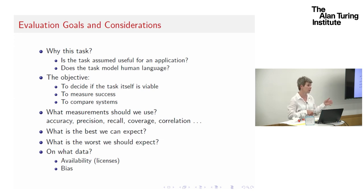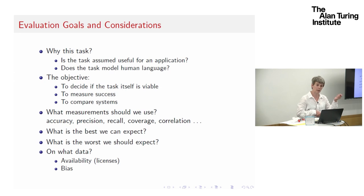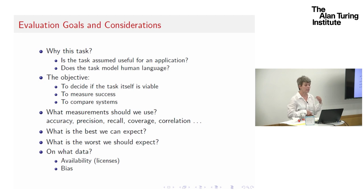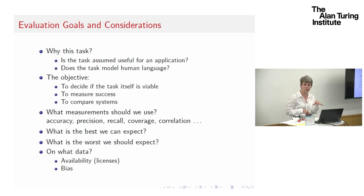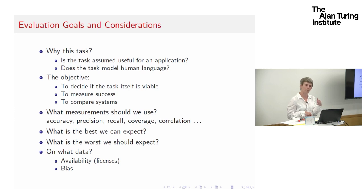Recall measures how many things did I get right out of all the things that I should have marked up. Coverage is how much of the data could I cover — some systems might just not be able to cover the data, as opposed to making a judgment of 'I'm not so sure, I won't bother.'